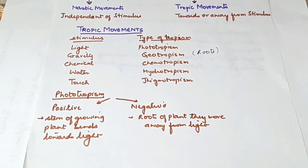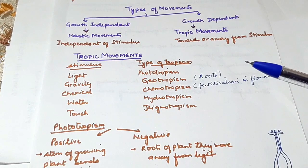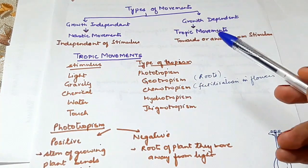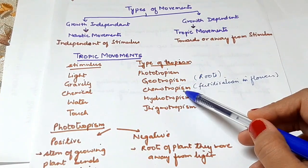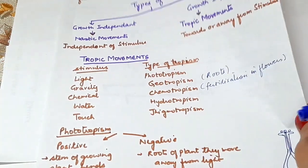Moving on to chemotropism - this is the response of a plant to chemical stimulus. When the plant part moves towards the chemical, that is positive chemotropism. When it moves away from the chemical, that is negative chemotropism.